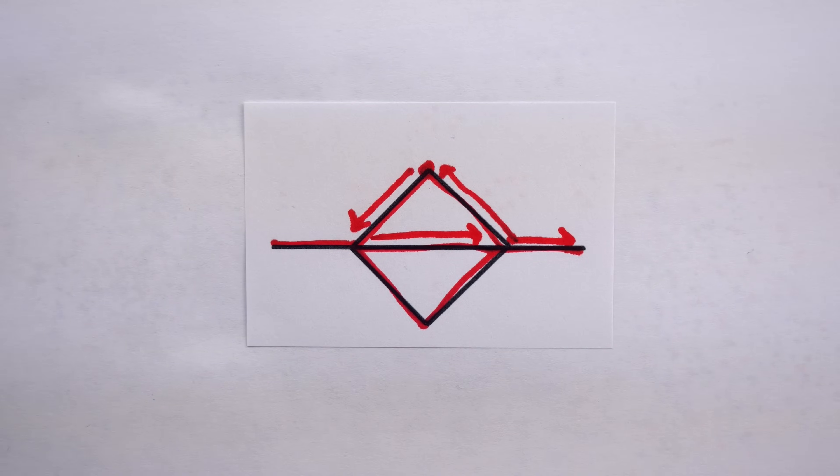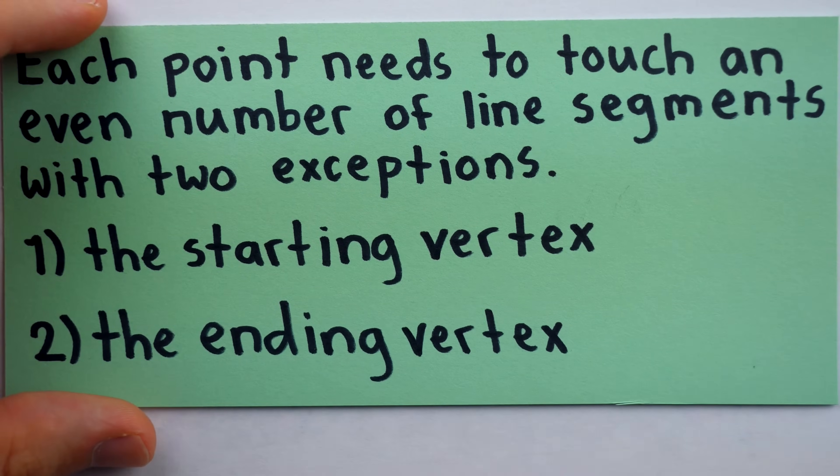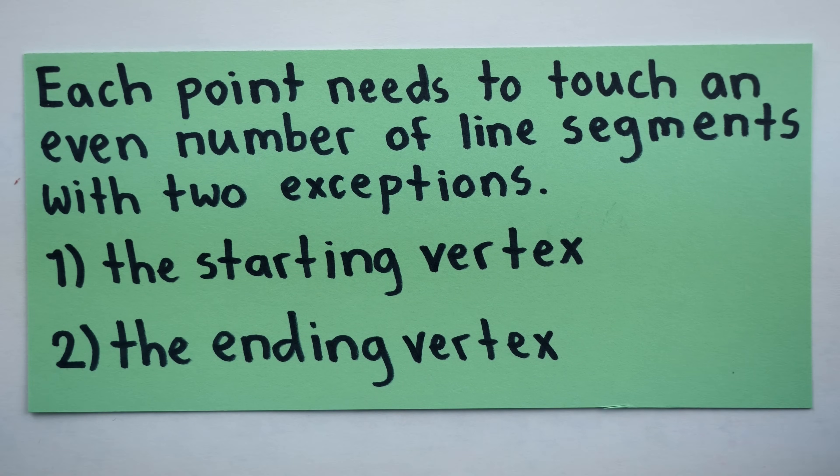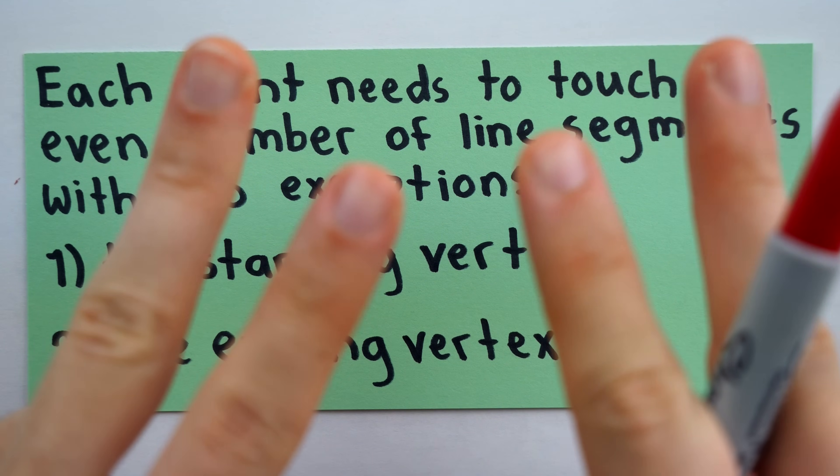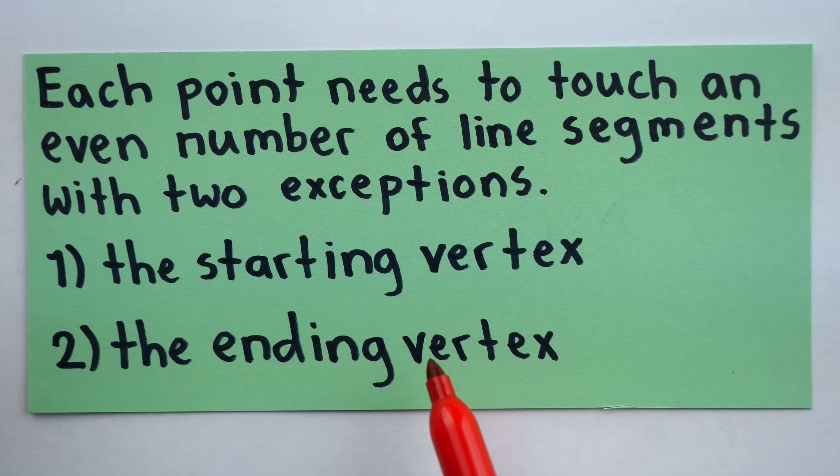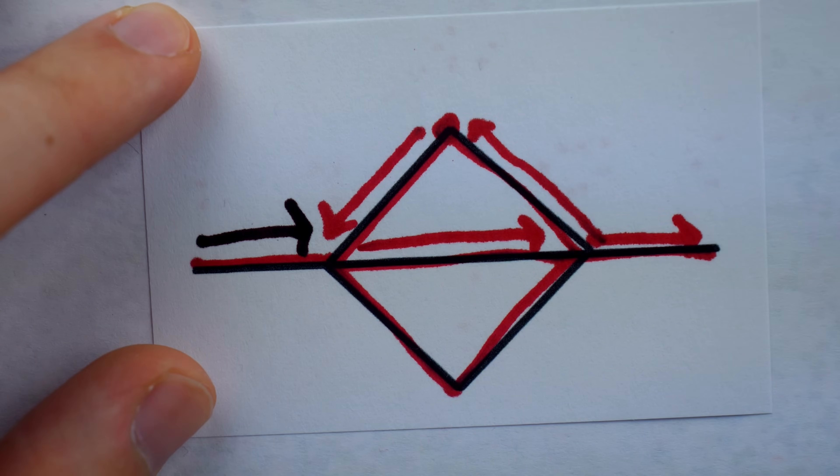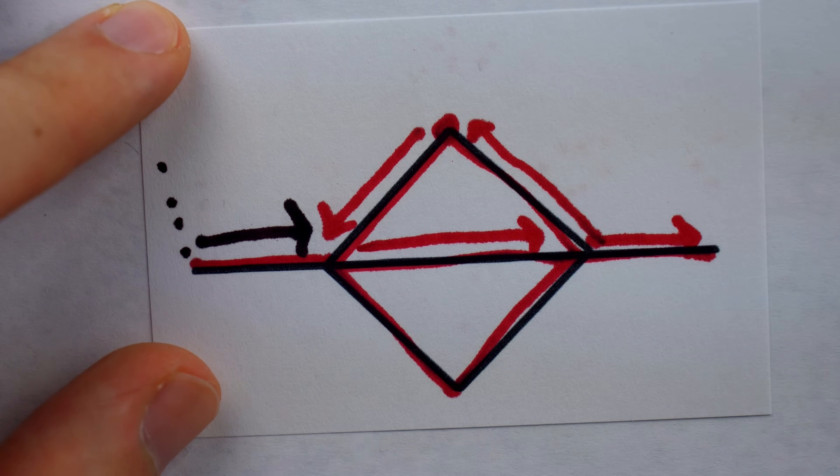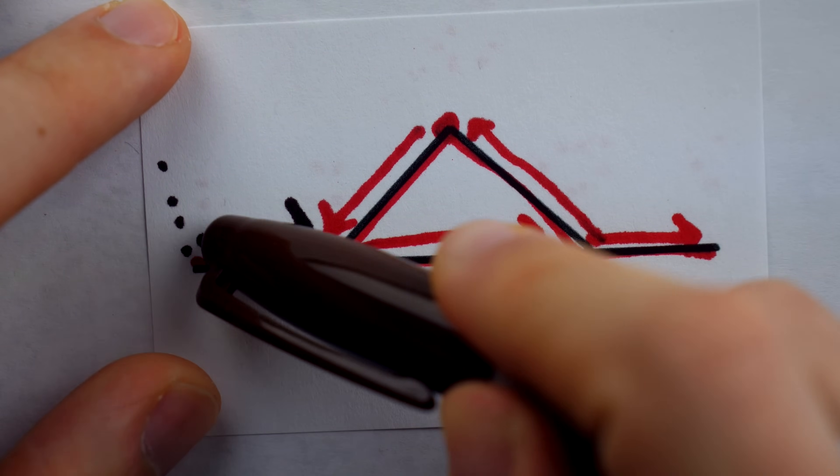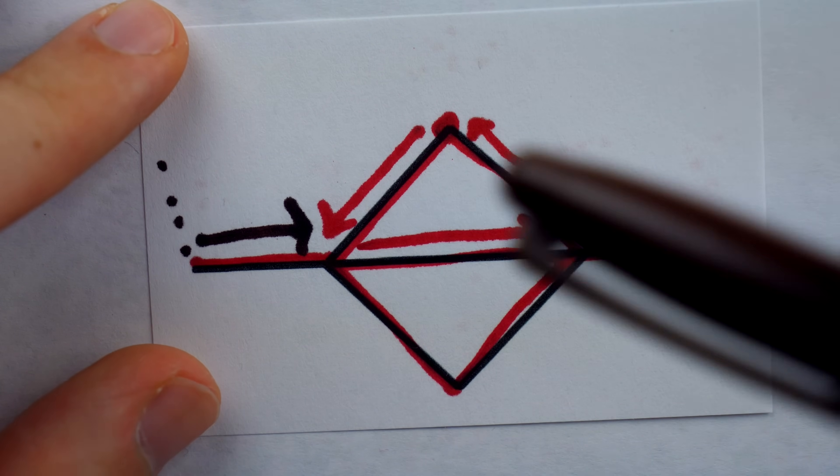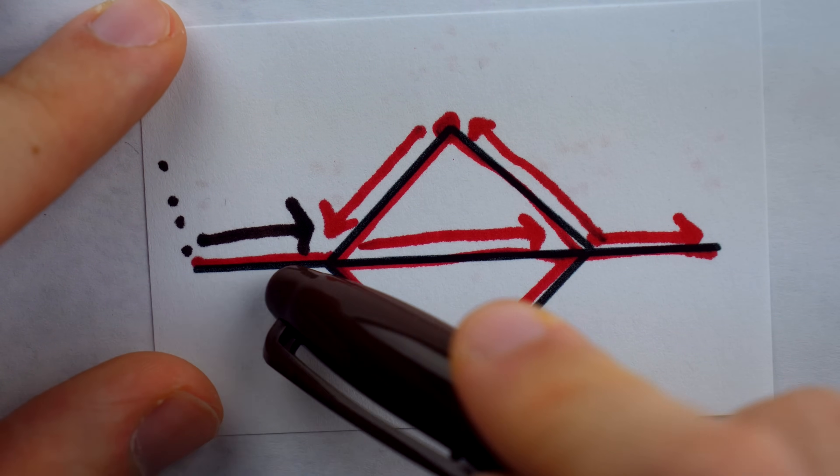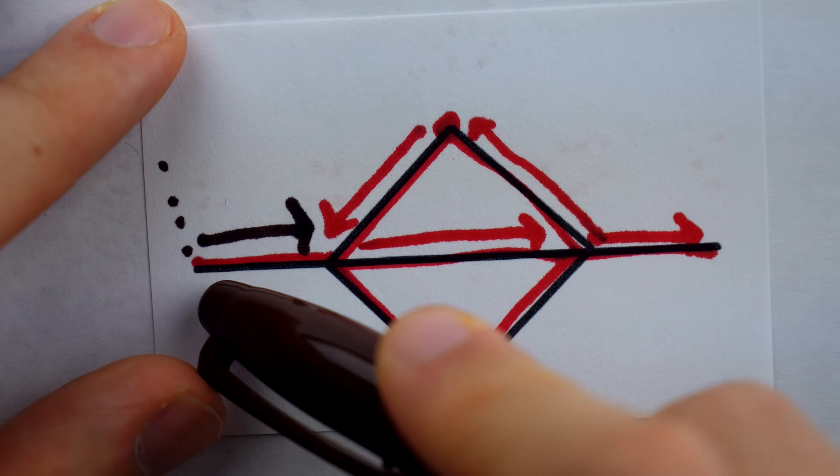There are, of course, two exceptions to this rule, the starting point and the ending point. The real word for what we've been calling a point is vertex. Because we get to leave the starting vertex without actually tracing a segment to get there, because we started there. So the starting vertex can have an odd degree, touching an odd number of segments. Like here, it's touching just the one segment.